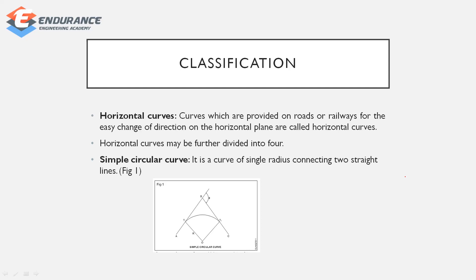Horizontal curves are provided on roads and railways for easy change of direction. The first type is the simple circular curve, where two normal straight lines are joined by a single radius arc — that is the simple circular curve.